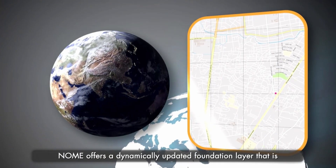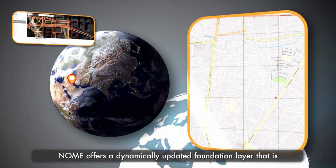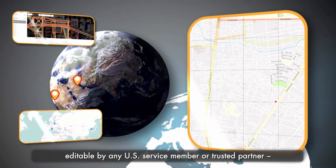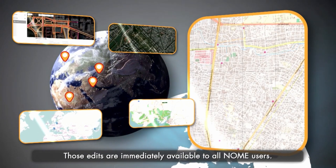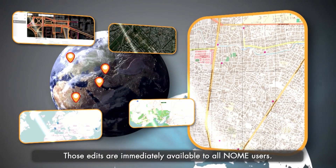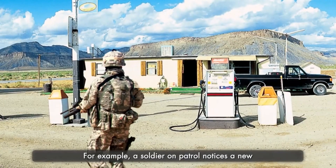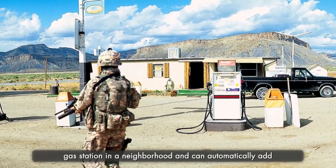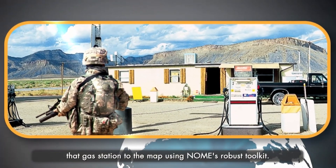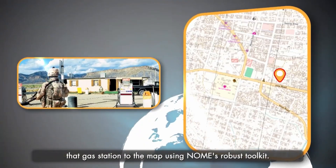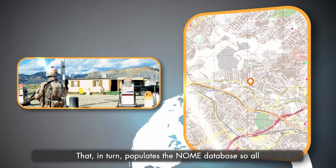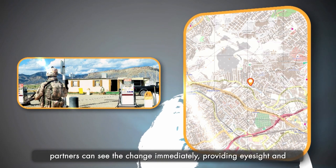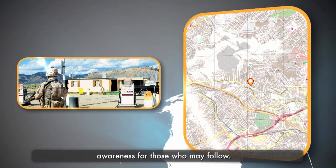Gnome offers a dynamically updated foundation layer that is editable by any U.S. service member or trusted partner anywhere in the world. Those edits are immediately available to all Gnome users. For example, a soldier on patrol notices a new gas station in the neighborhood and can automatically add that gas station to the map using Gnome's robust toolkit. That in turn populates the Gnome database so all partners can see the change immediately, providing eyesight and awareness for those who may follow.